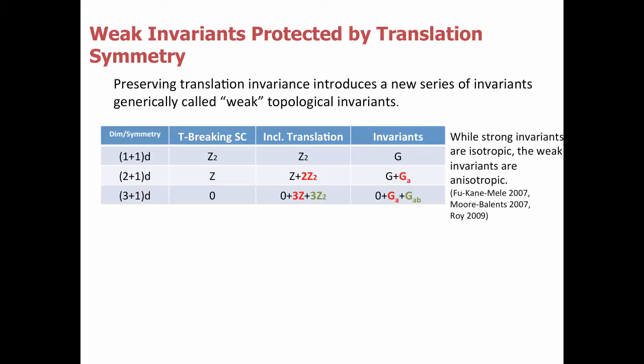The first place weak topological states appeared was in the context of strong and weak topological insulators with time-reversal symmetry in three dimensions. This first appeared in the work of Fu-Kane-Mele, Mong-Balents, and Roy in 2007.